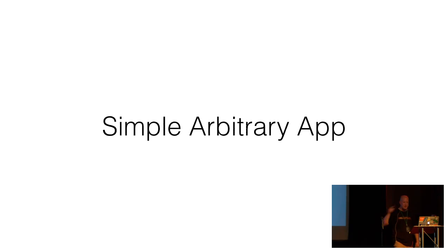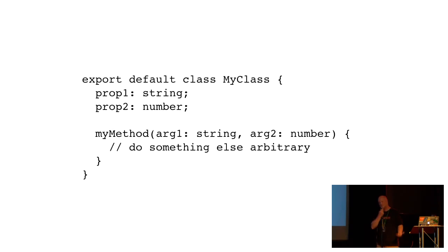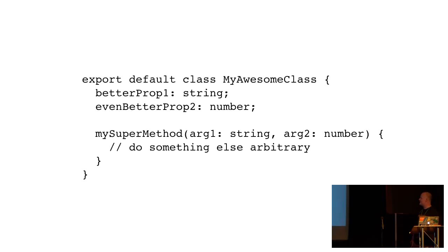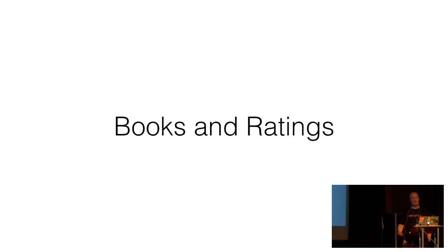So on to the demos. In order to show something you need something to write code against. I decided to model something a little more real world: books and ratings. We're going to have a Book class with the ability to call addRating and associate a rating with that book. And that will allow me to talk about some interesting O'Reilly titles that are going to be coming out soon.